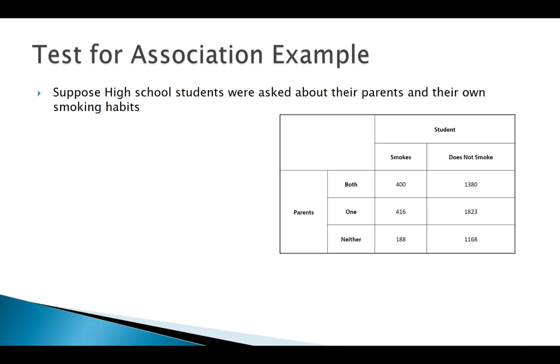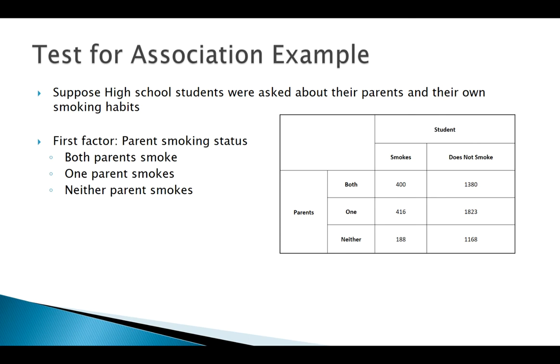All right, so let's look at an example of how we apply these ideas of a two-way test for association. This is a data set we may have seen before, about students, whether they smoke or not, and their parents' smoking habits.